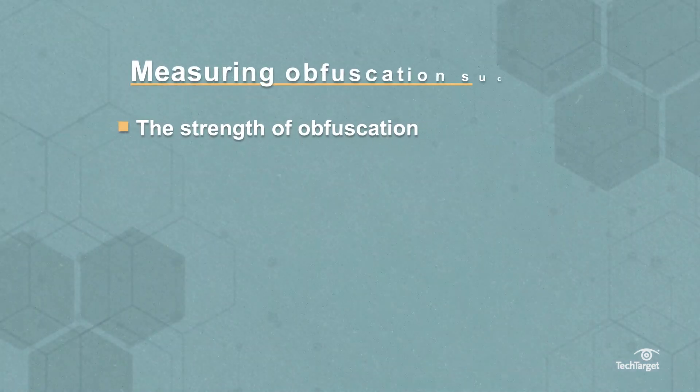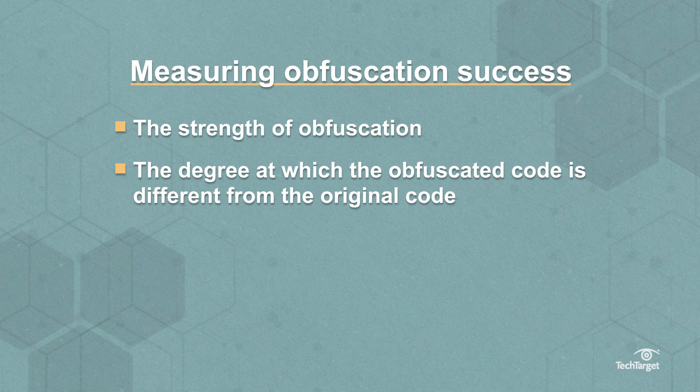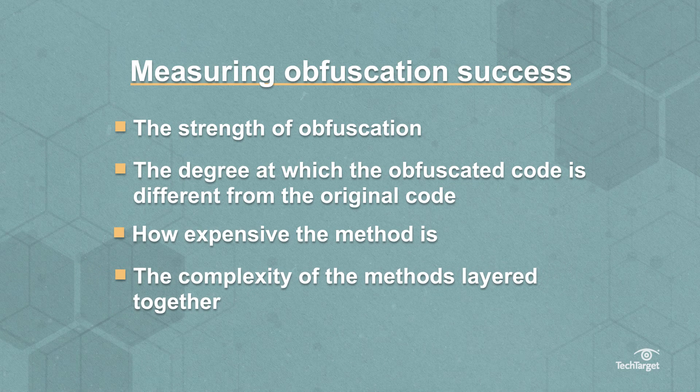To measure the success of these methods, programmers often look for four key factors: the strength of obfuscation, the degree at which the obfuscated code is different from the original code, how expensive the method is, and the complexity of the methods layered together.